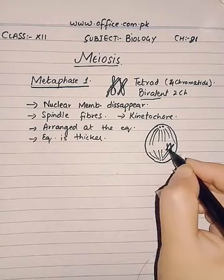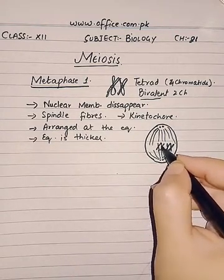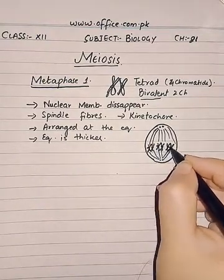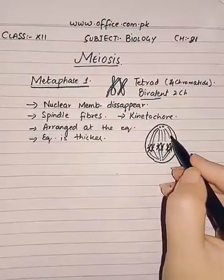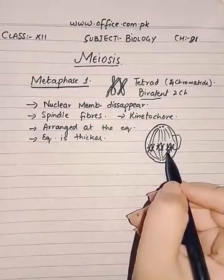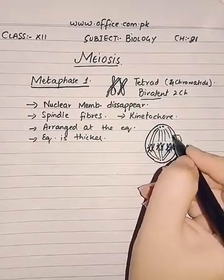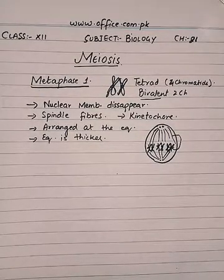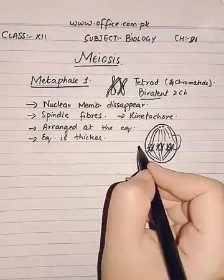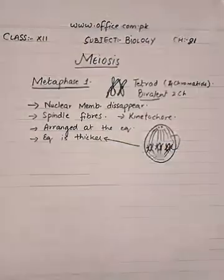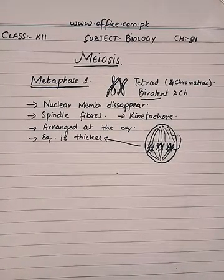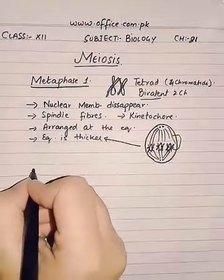The homologous pairs will be attached, and the kinetochore fibers will be attached at the kinetochore protein at the centromere. This is the spindle fiber and the nuclear membrane has disappeared. There is more concentration of chromosomes at the equator, so that is why the equator will become thicker. This is all about metaphase one.